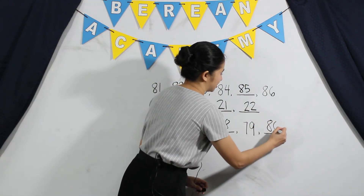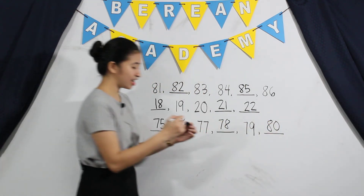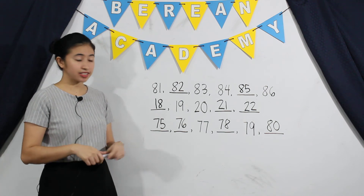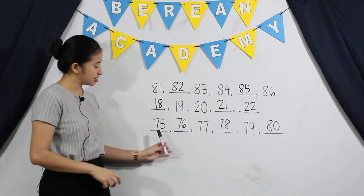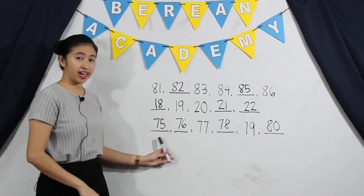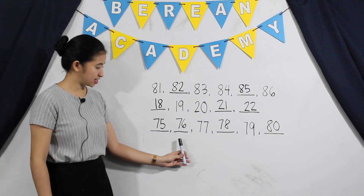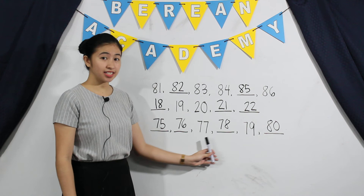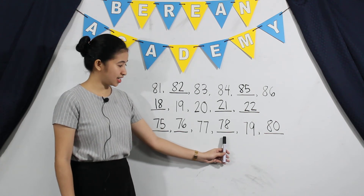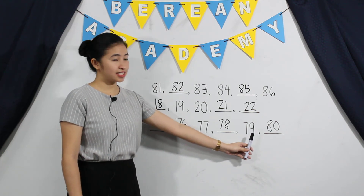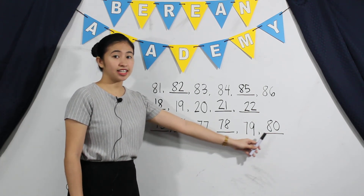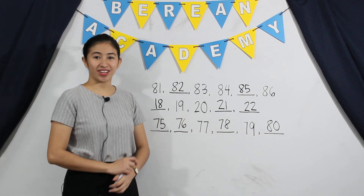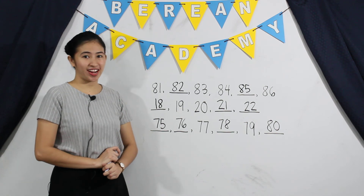So let's check if it is correct. Let's count up again: 75, 76, 77, 78, 79, 80. So it is correct.